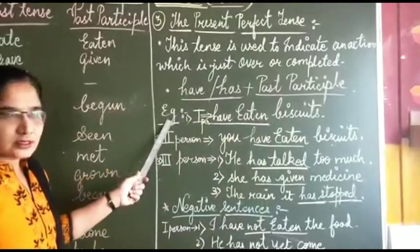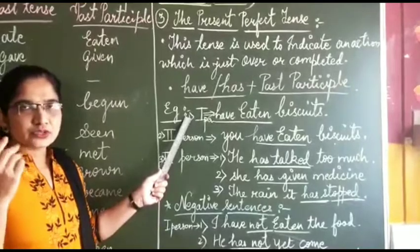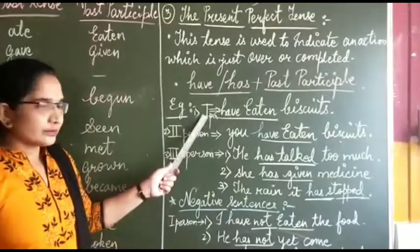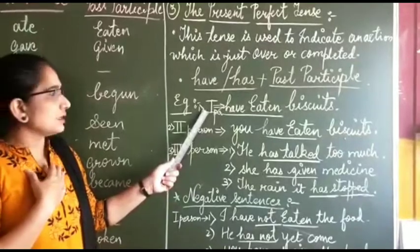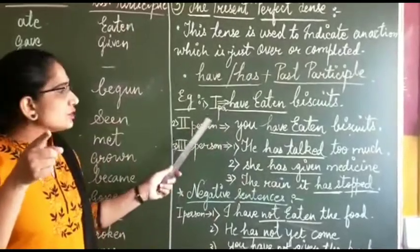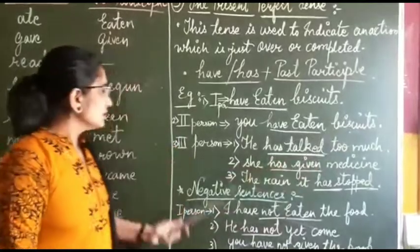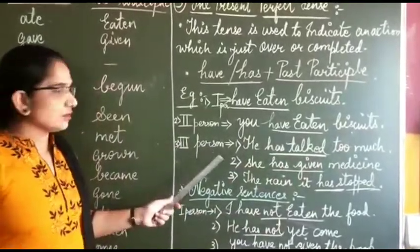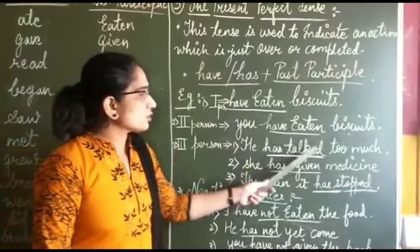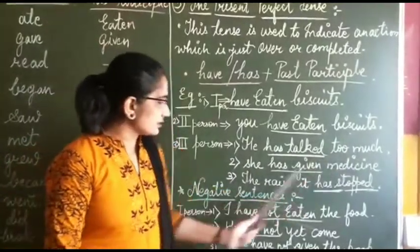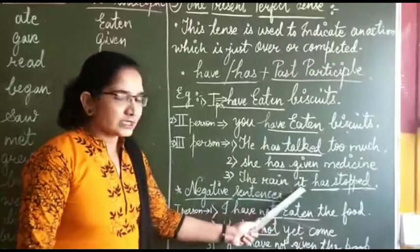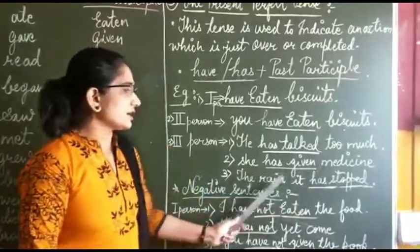Let us see the examples. In the examples there are three persons, as I told yesterday. First person: I — I am telling about myself. I have eaten biscuits. Second person: you — you have eaten biscuits. Third person: he, she, it. He has talked too much. She has given medicine. The rain — it has stopped, or: the rain has stopped.